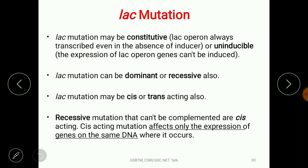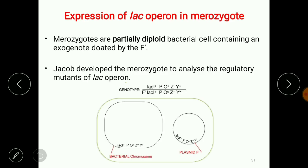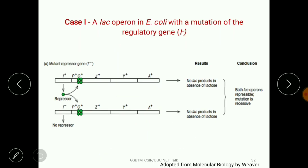Jacob and Monod tried to understand the different situations in which the lac operon is constitutive or uninducible, whether it is dominant or recessive, and whether cis-acting or trans-acting elements are involved — including whether the operator, promoter, regulatory elements, or structural genes are recessive or dominant. For that, they made merozygotes, which are partially diploid bacterial cells. They developed a merozygote of the lac operon, with chromosomal DNA and plasmid DNA both carrying the lac operon, and studied various mutants.